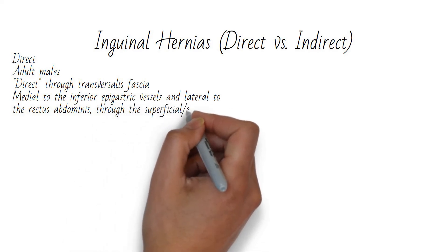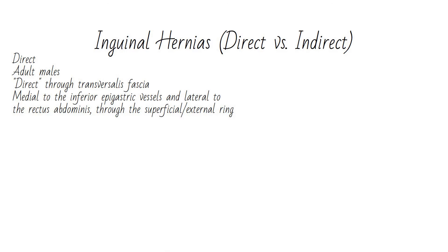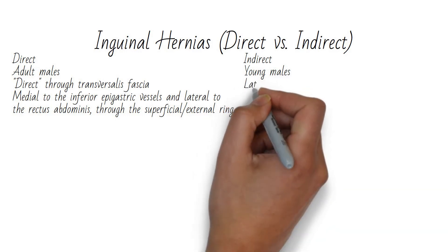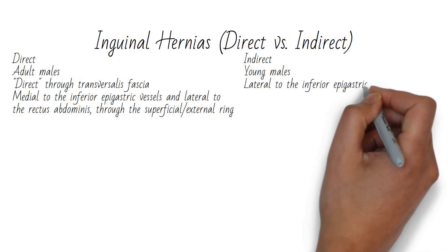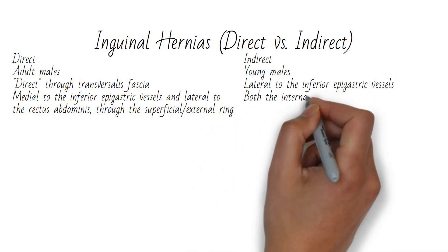This puts the hernia inside of Hesselbach's triangle, which I'll discuss shortly. Indirect hernias are present in young, usually infant males. They occur lateral to the inferior epigastric vessels because they travel through both the internal and external inguinal rings.